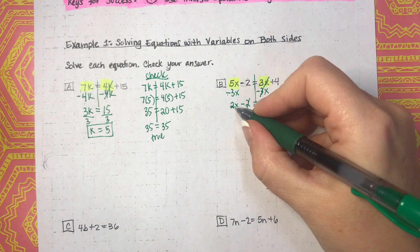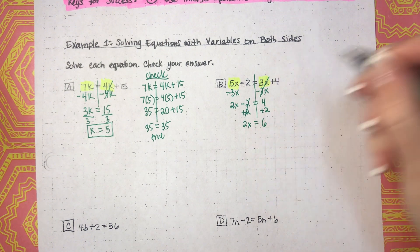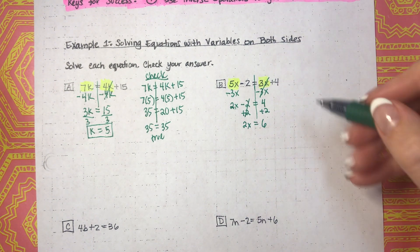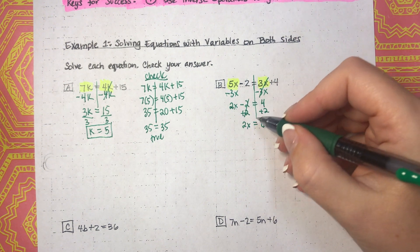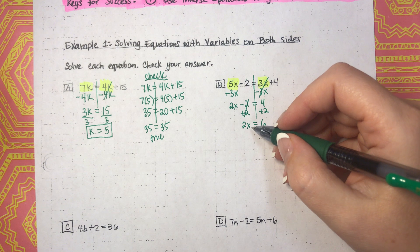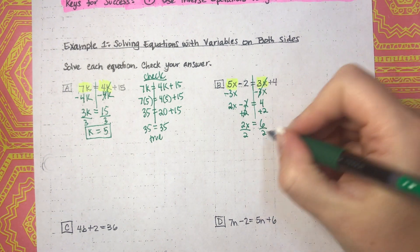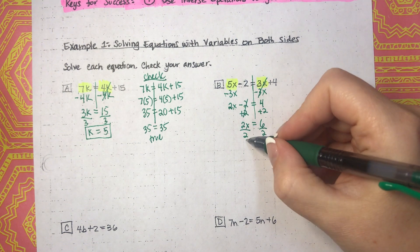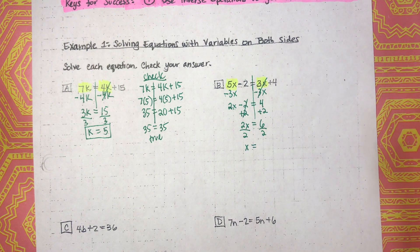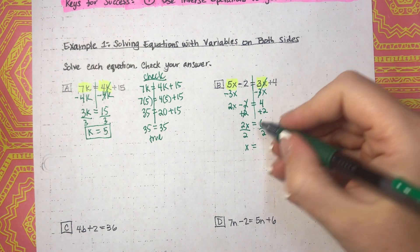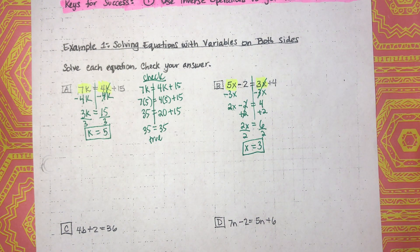5x minus 3x is 2x, minus 2 equals 3x minus 3x which is 0, plus 4. Now we have a two-step equation. Adding 2 to both sides: negative 2 plus 2 cancels, giving us 2x equals 6. Then dividing both sides by 2: 2 divided by 2 is 1, so x is by itself. 6 divided by 2 is 3. So x equals 3.